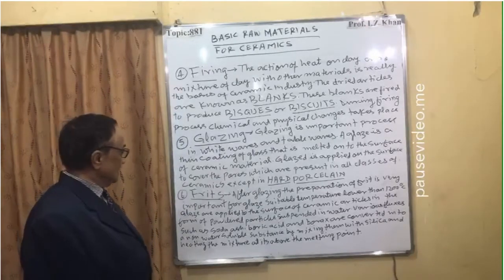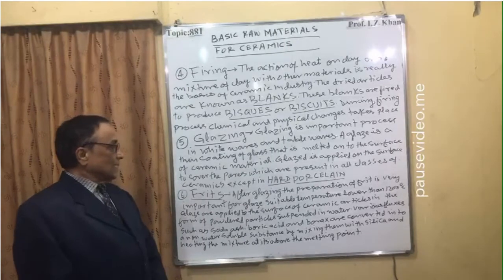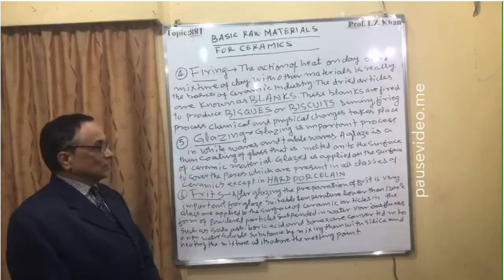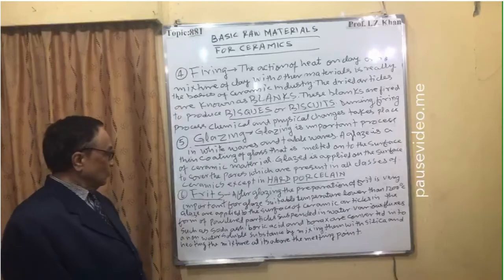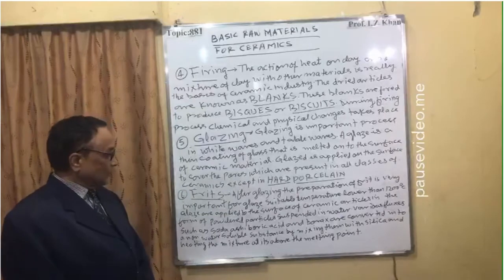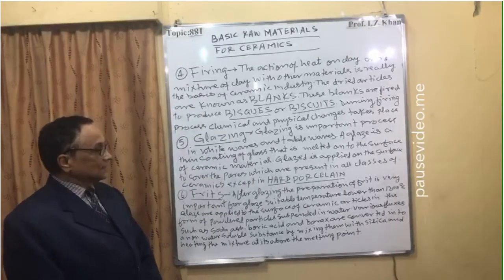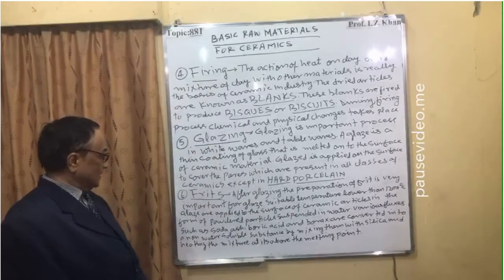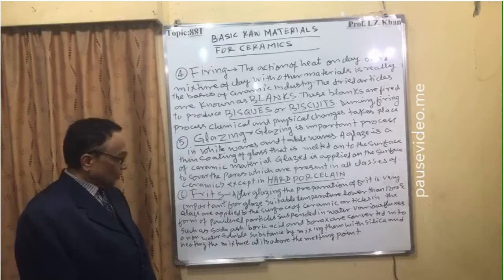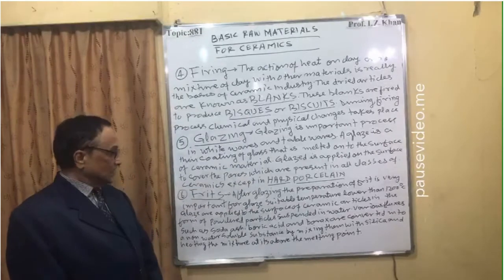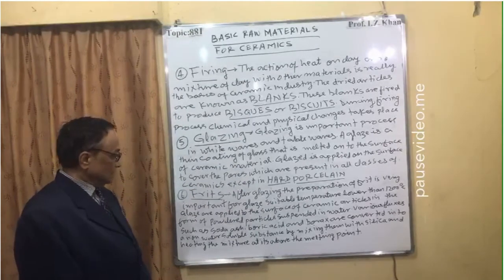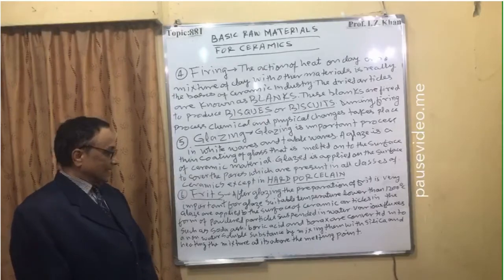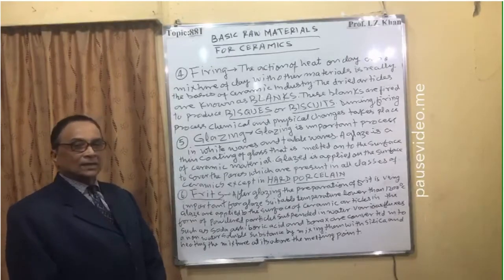After glazing, the preparation of frit is important. For glazes applied at temperatures lower than 1200 degrees centigrade, the glaze is applied to the surface of ceramic particles as a powder suspended in water. Various fluxes — such as soda ash, boric acid, and borax — are converted into non-water-soluble substances by mixing them with silica and heating the mixture above the melting point.